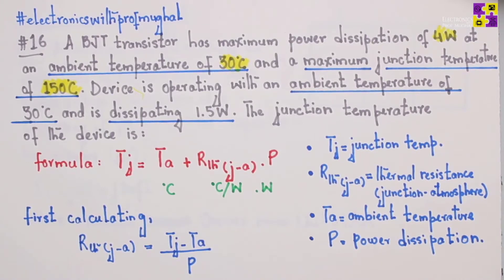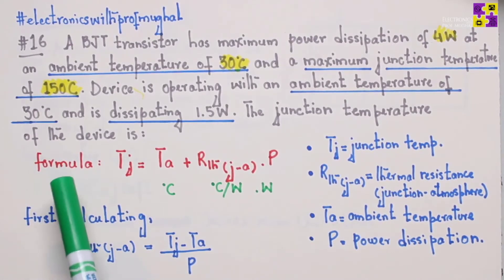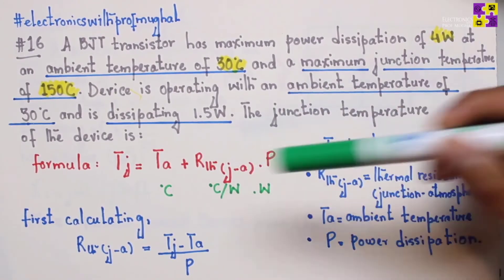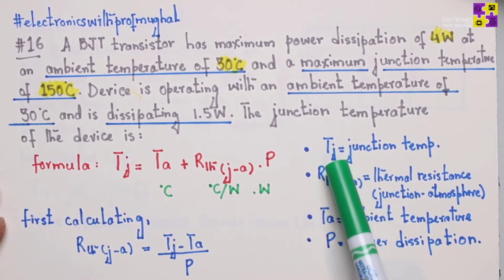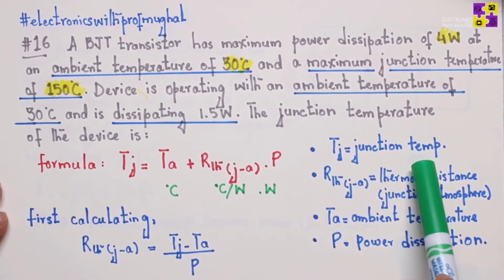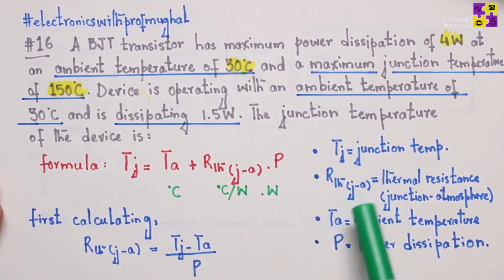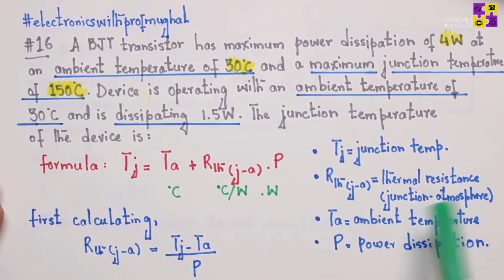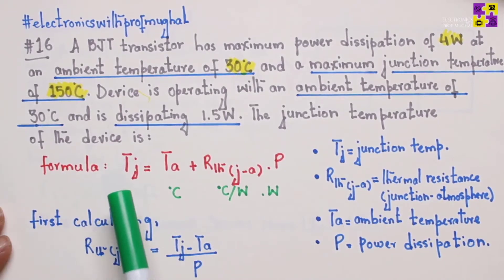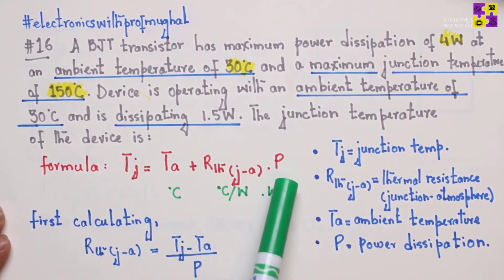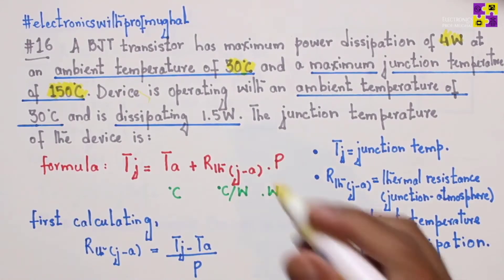Junction temperature is basically the highest operating temperature of the actual semiconductor the electronic device is made of. Before we move on to the formula, let's look at some acronyms: T_J is the junction temperature — that is what we are solving for. We also have thermal resistance from junction to atmosphere, ambient temperature T_A, and P which is the power dissipation.